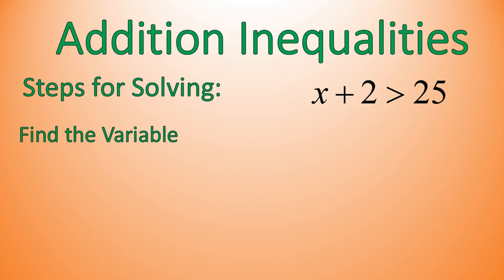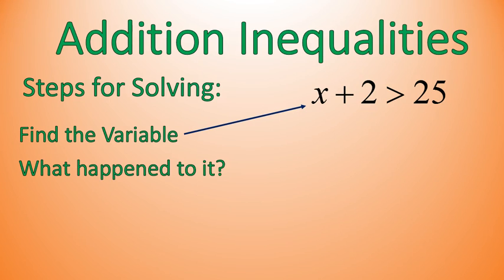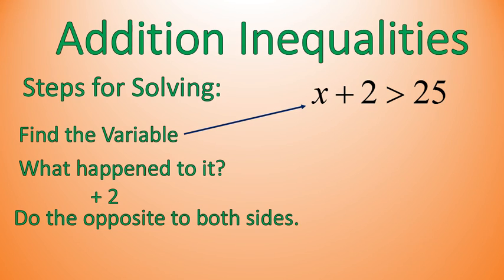The steps are: one, you find the variable. X is my variable. We ask ourselves, what happened to it or what is connected to that X? And it is a plus 2. We added 2 to there. So now we're going to do the opposite, which is called the inverse operation. What's the opposite of adding 2? Well, it's subtracting 2. So we're going to subtract 2 from both sides of this inequality.